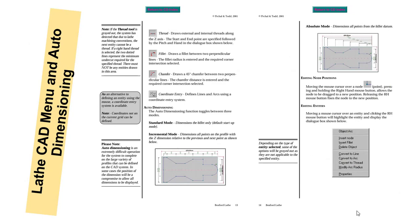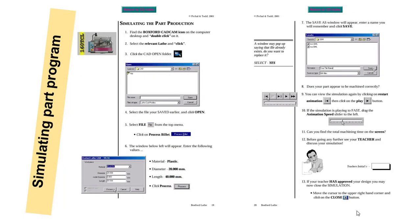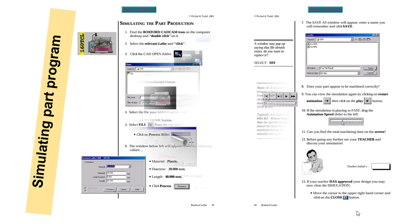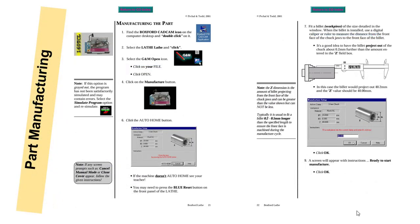These slides have been discussed in the previous lecture. After CAD modeling and code generation, we will simulate the part, and after simulation, if it is okay, we will send the codes to the manufacturing machine.